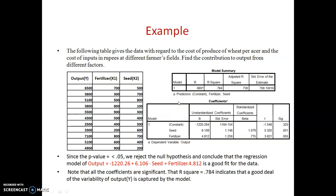Here we see an example of multiple regression with one dependent variable, that is y, the output or yield, and two independent variables x1 and x2, called fertilizer and seed. The following table gives the data with regard to the cost of produce of wheat per acre and the cost of inputs in rupees at different farms. Find the contribution of the output of the factors and how much the fertilizer and seed contribute to the output.